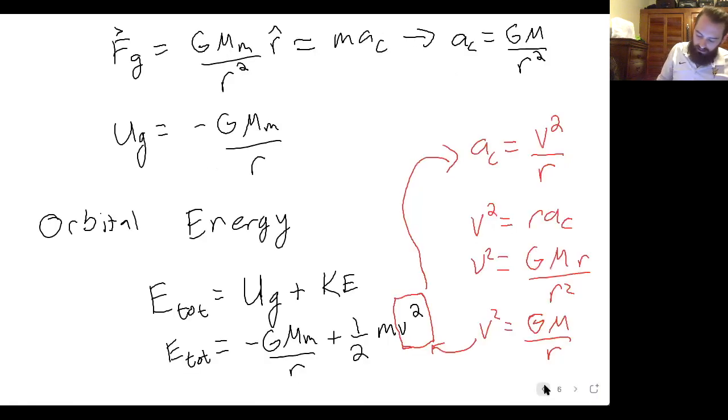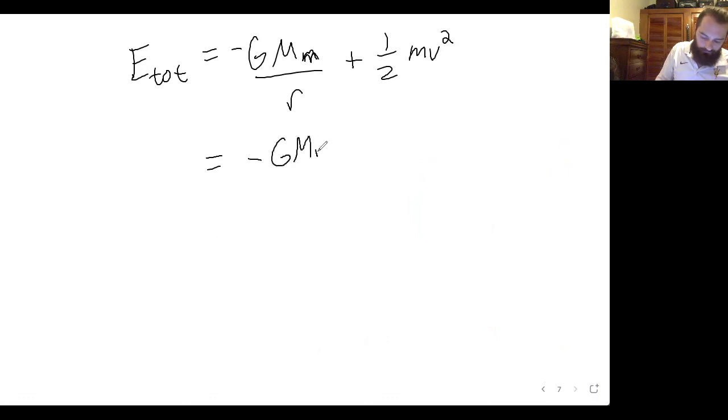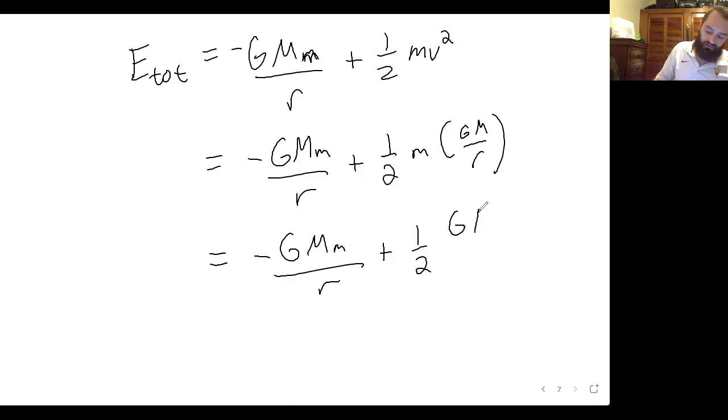And we can plug this v squared into our total energy. So our total energy was negative GMm over r plus one half m v squared. We have a value to replace the v squared, which is GM over r. And now we have negative GMm over r plus one half GMm over r. So the total energy of an orbiting body is negative one half GMm over r.